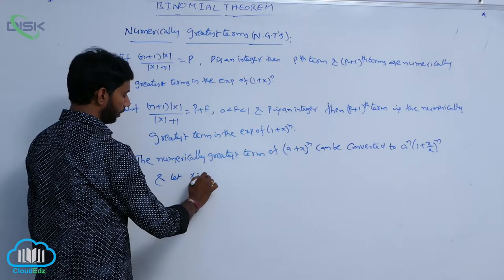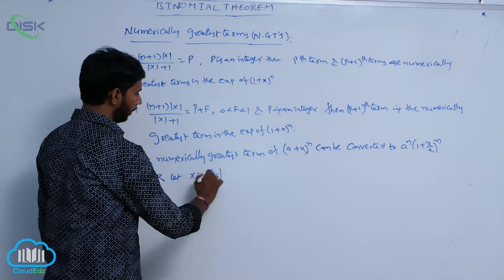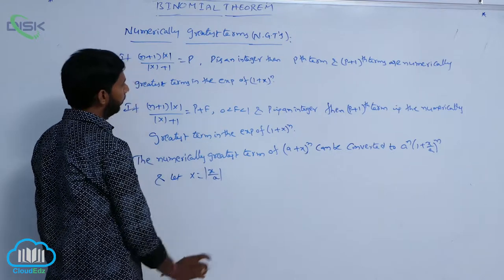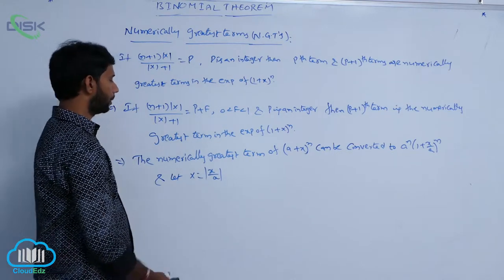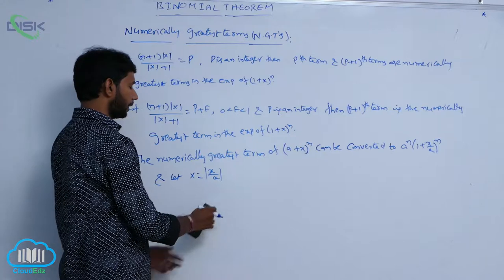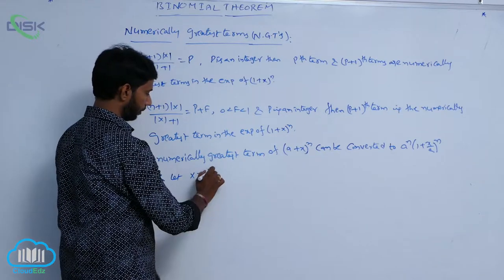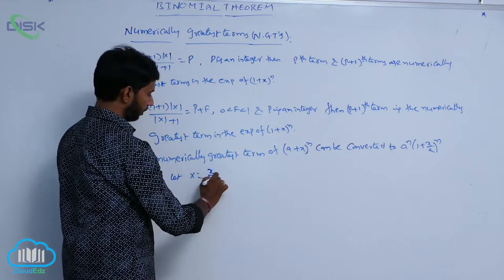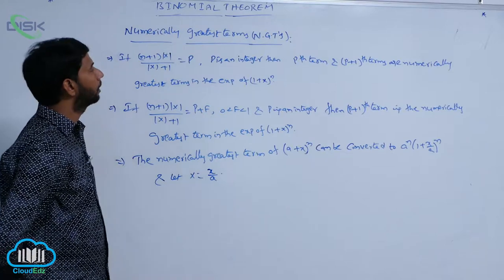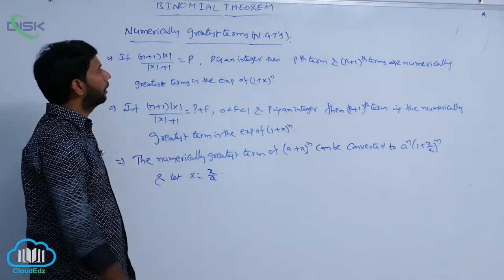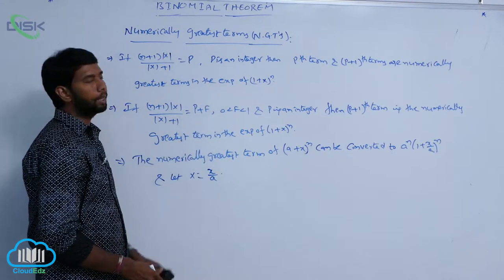Let capital X be equal to mod of X by A, or X by A. Then find the numerically greatest term.